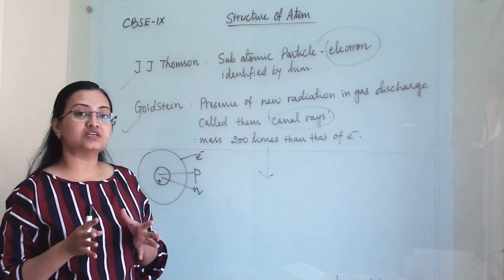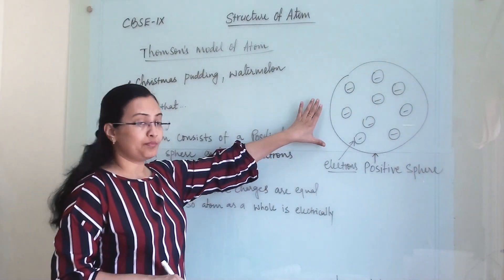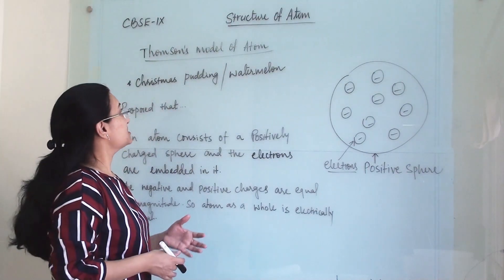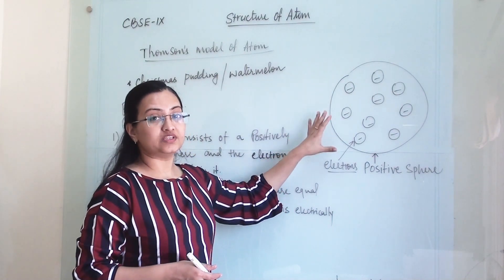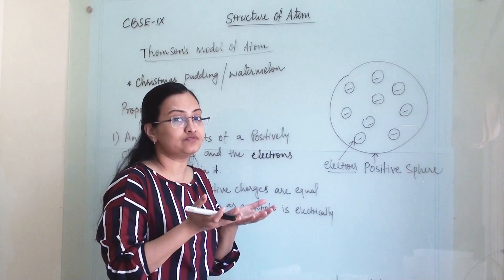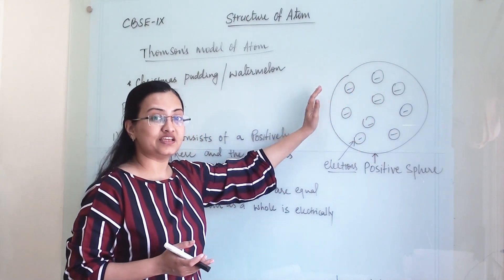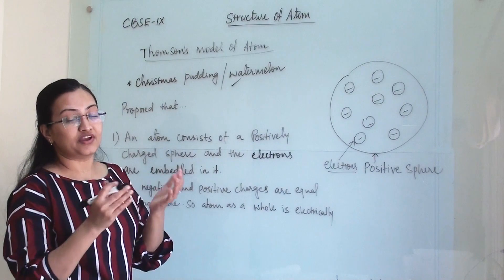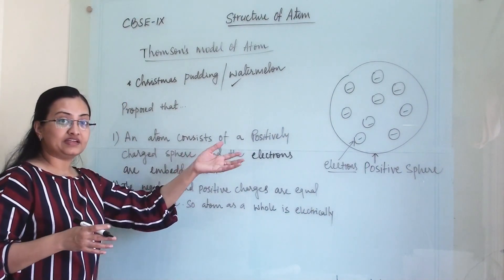Going forward, we will discuss the atomic model given by J.J. Thomson and then the model given by Rutherford. Thomson proposed his model and compared it to Christmas pudding and watermelon. In the Christmas pudding analogy, dry fruits are evenly distributed in the pudding, which represents a positive sphere, with electron charges equally distributed on it. Similarly, like seeds evenly distributed in the red part of a watermelon, that is how he predicted the structure of the atom.